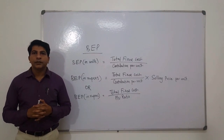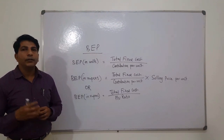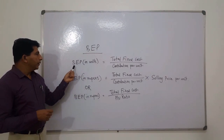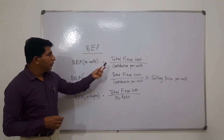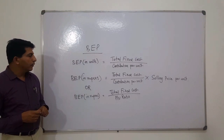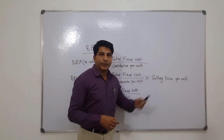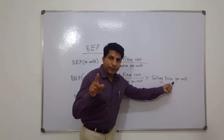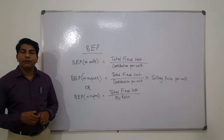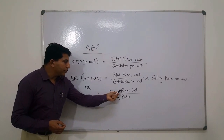Break-even point is the volume of output or sales at which total cost is exactly equal to sales — it is the point of no profit and no loss. We have three formulas for calculating break-even point. Break-even point in units or quantity equals total fixed cost divided by contribution per unit. Break-even point in value equals break-even point in units multiplied by selling price per unit. Alternatively, break-even point in value equals total fixed cost divided by PV ratio.